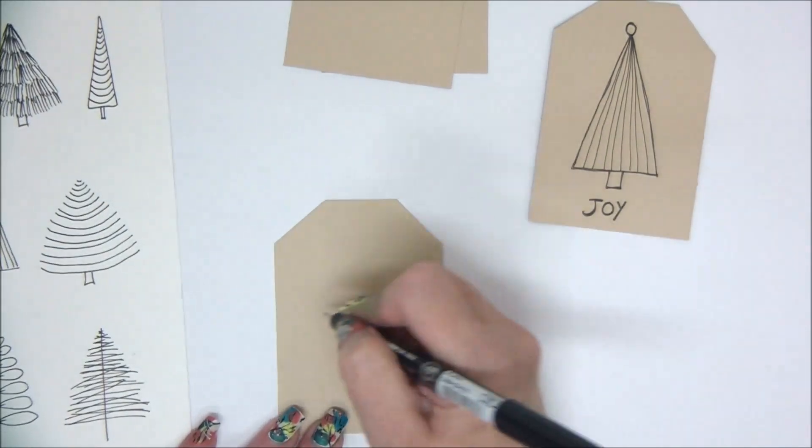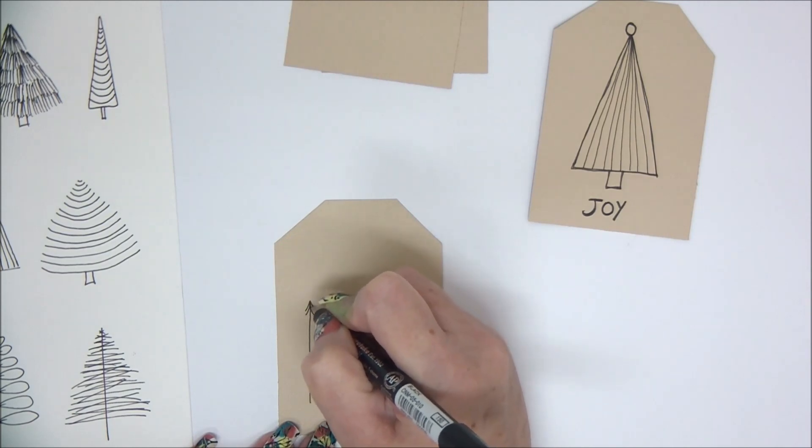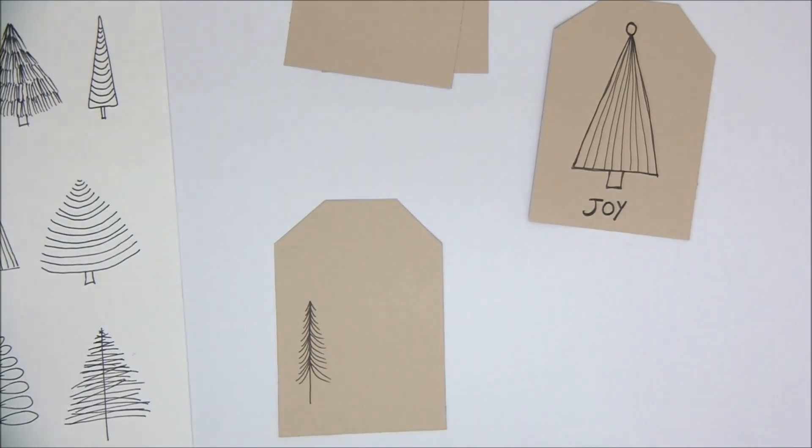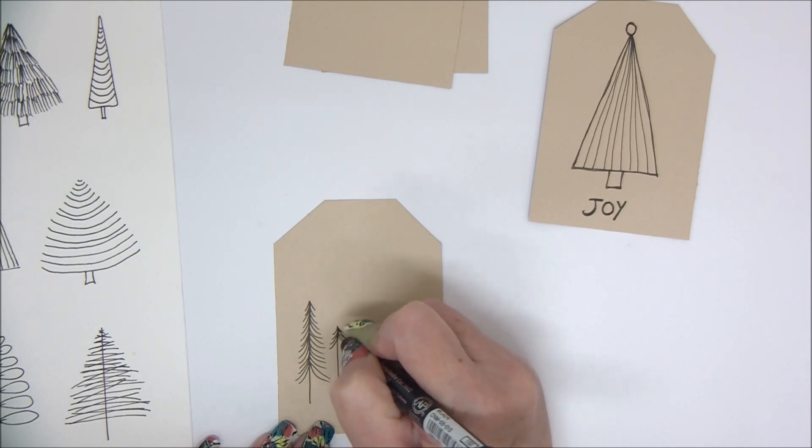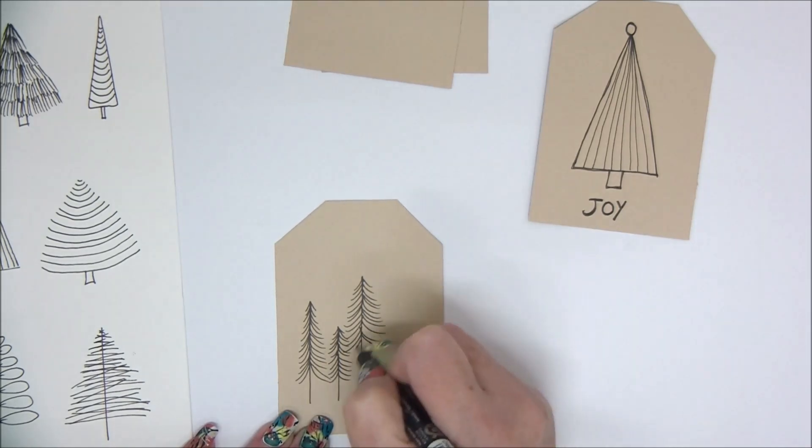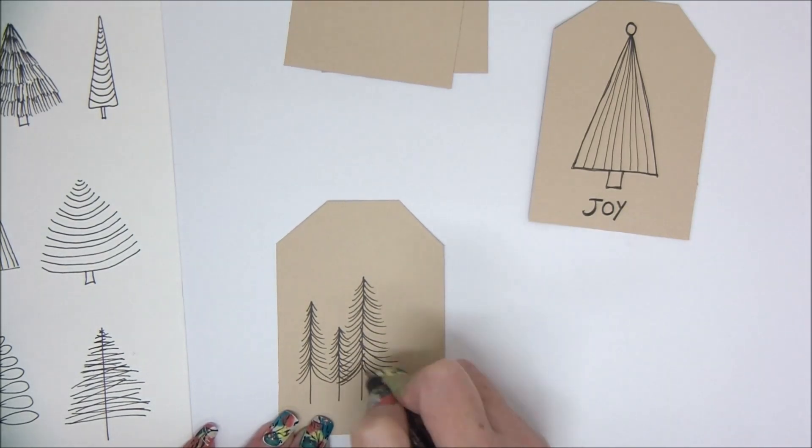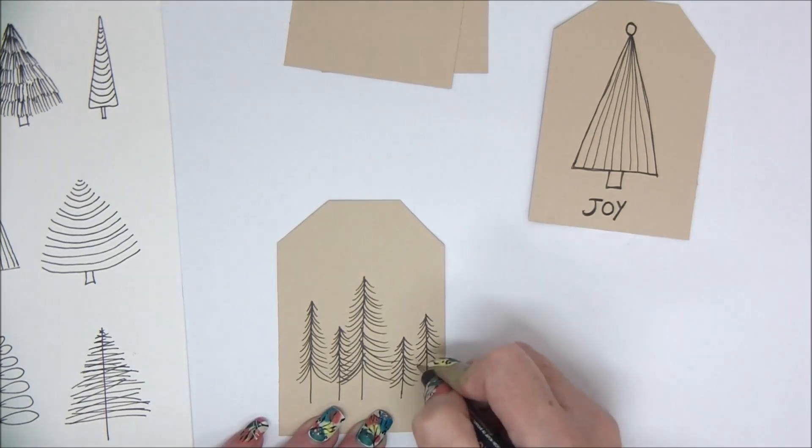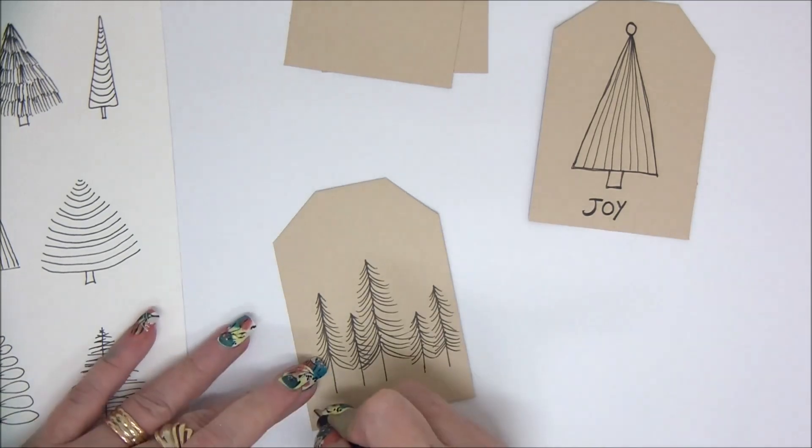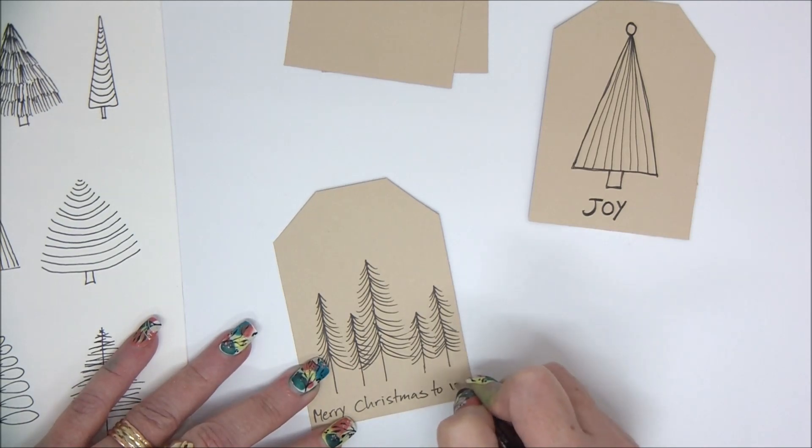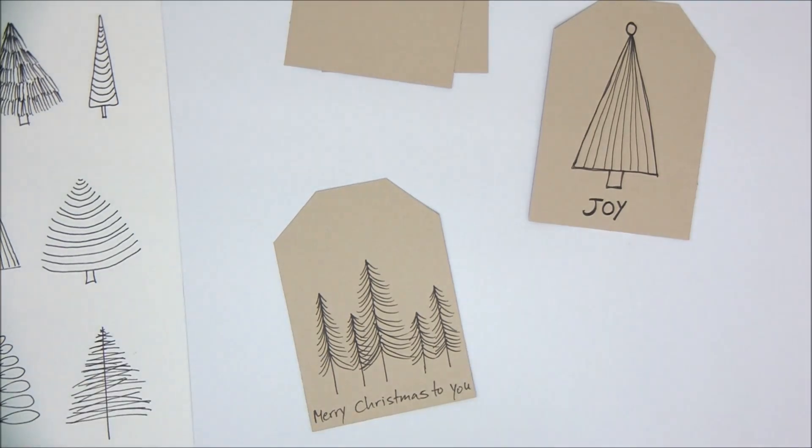Next, we're going to make a line of trees, so look sort of a small forest—adding different sizes of the same tree drawing. And that will be a little forest of trees. And look at that, just by adding a few lines you have a drawing. And then just add Merry Christmas to You or whatever text you want to add, and you have a beautiful tag.